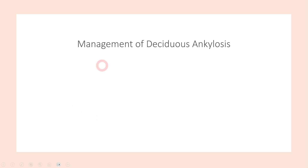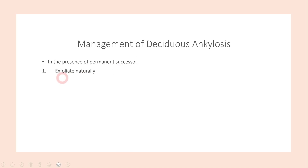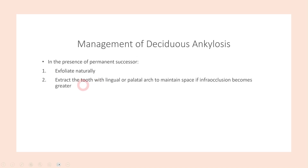For management of a deciduous ankylosed tooth: if the permanent successor is present, we can opt for natural exfoliation of the deciduous tooth, allowing the permanent tooth to erupt naturally. We can also go for extraction of the deciduous tooth with placement of a lingual or palatal arch to maintain space, ensuring the permanent tooth has sufficient space to occupy its normal position in the oral cavity.